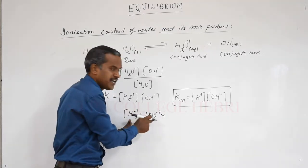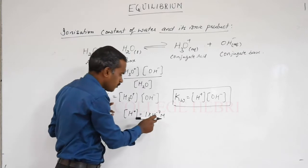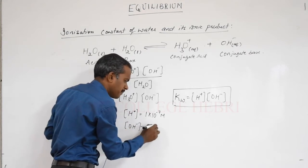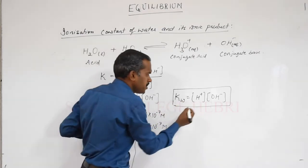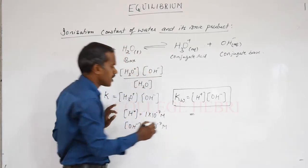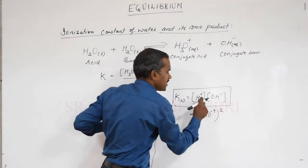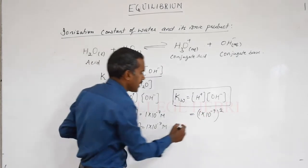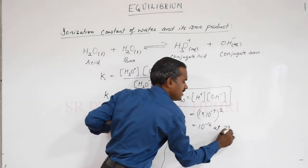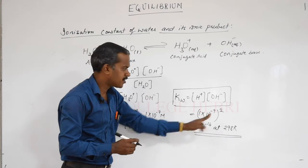Being an equilibrium constant, it is temperature dependent. The concentration of H+ is 1×10⁻⁷ and the concentration of OH− is also 1×10⁻⁷ molar. Substituting, the ionic product of water is (1×10⁻⁷)² = 10⁻¹⁴ at 298 Kelvin. That is the important value you have to know: Kw = 10⁻¹⁴ at 298 Kelvin.